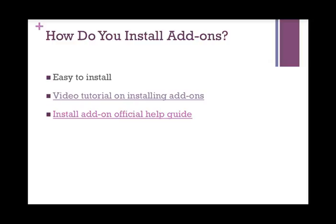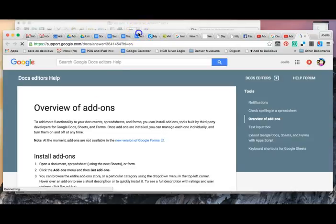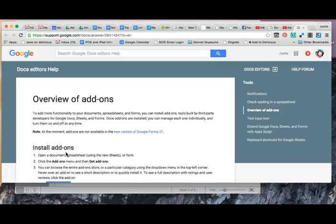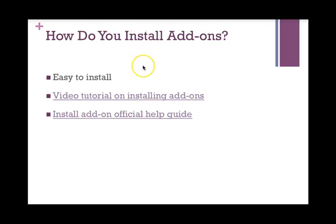How do you install add-ons? As mentioned in the previous video, they are very easy to install. Once you are done with this session, you are going to go to the links document for Session 1 and watch the video tutorial on installing add-ons — it is linked there, but I am not going to play the whole tutorial for you here. Also, if you are a person who likes written directions, the Install Add-Ons Official Help Guide is also on the links document and it will take you directly to the Google Support page for installing add-ons. So if you are someone who likes to read instead of watch a video, that second link is for you.